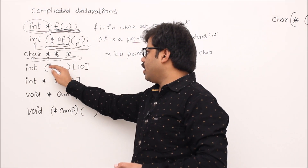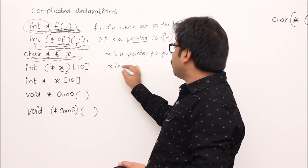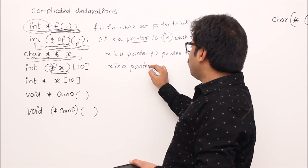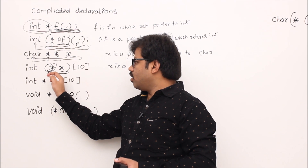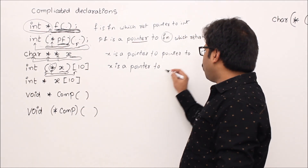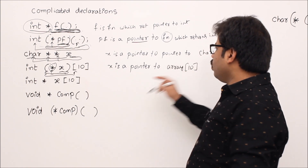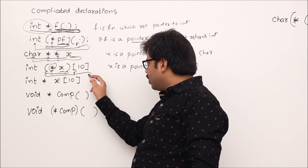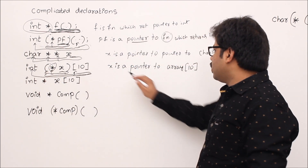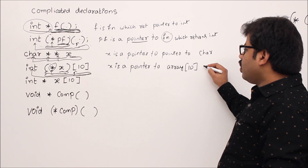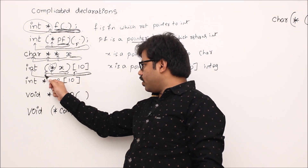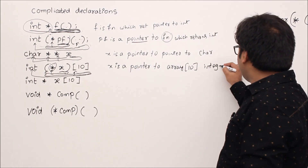Now this one has a priority symbol. 'x is a' — because of priority, go left. We see a star — 'x is a pointer to.' We reach the left parenthesis, so priority is resolved. Go right: we see an array symbol — 'pointer to array of 10.' Reach dead end, go leftmost — we reach int. So 'x is a pointer to an array of 10 integers.'